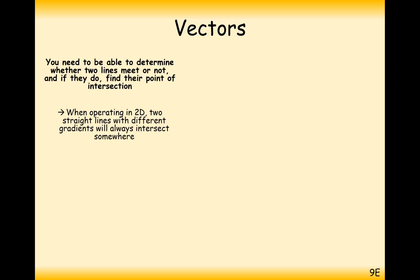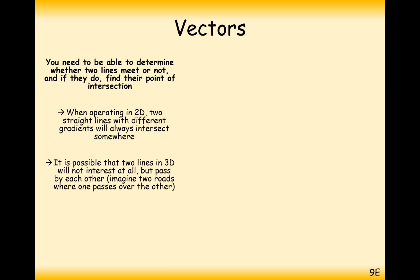Let's consider what happens in three dimensions. In two dimensions you've either got two parallel lines or two lines that are going to intersect. But in three dimensions you've got three possible options: parallel lines, lines that will intersect, and lines that neither do either of those two. We call those skew lines.